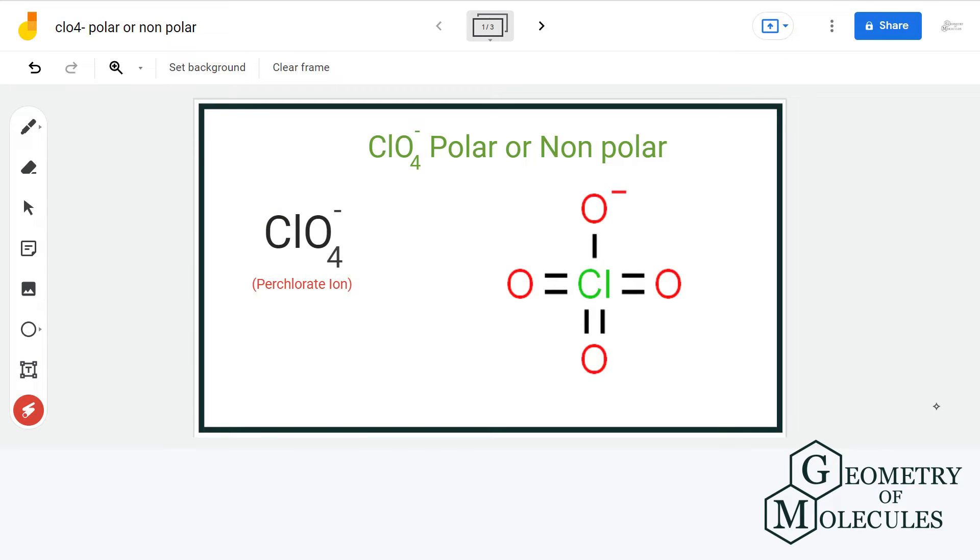It's a chemical formula of perchlorate anion and to understand its polarity, we are first going to look at its Lewis structure followed by its molecular geometry.